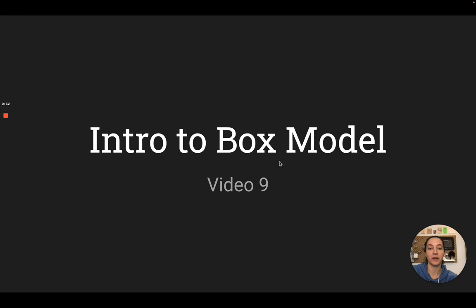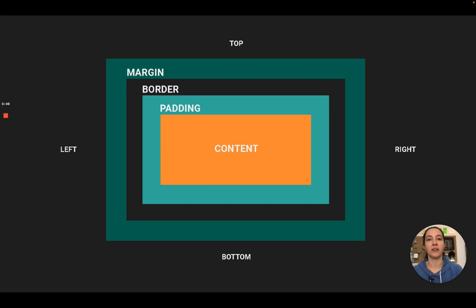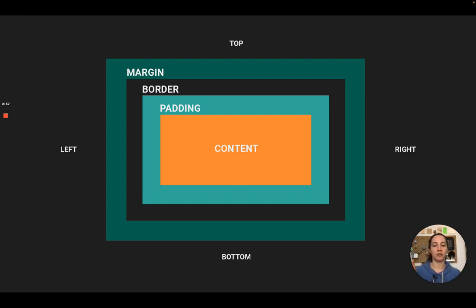Today we're talking about the box model. The box model is how content is set up by default inside of HTML and CSS. You automatically get a box that goes around your content — whether that's text or an image, however big it is, is how big that content box is going to be. Stuff like paragraphs will be the height of that content and the width of the screen, but something like an image will be the width and height of the image. And that's your content.